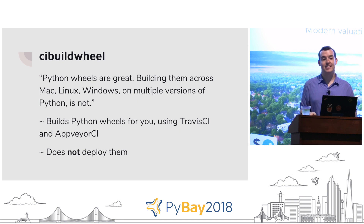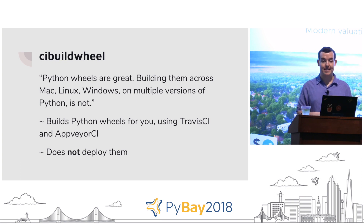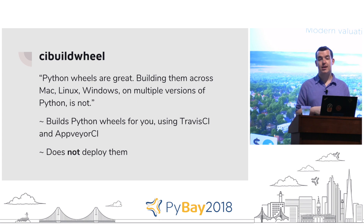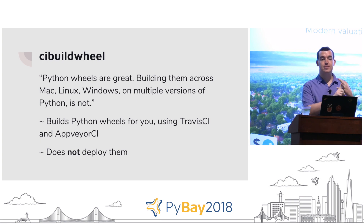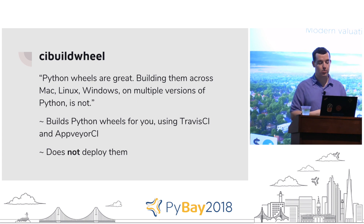There's a great program — really a bunch of templates — called CI Build Wheel. As the quote says: 'Python wheels are great. Building them across Mac, Linux, Windows on multiple versions of Python is not.' CI Build Wheel provides templates for Travis CI and AppVeyor CI. Travis CI can build wheels for ManyLinux and macOS, and AppVeyor CI can build wheels for Windows. As long as you can integrate your build system with this, you can generate all the wheels you need. One note: it does not do deployment, so you have to put in a little work for that.